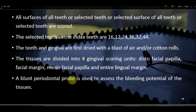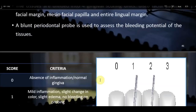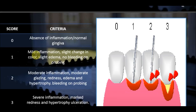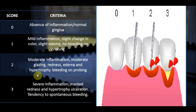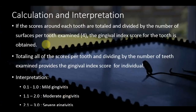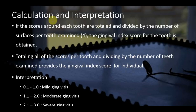Teeth and gingiva are dried with air or cotton rolls. Four gingival units are assessed per tooth: disto-facial papilla, facial margin, mesio-facial papilla, and lingual margin. A blunt periodontal probe is used to assess bleeding potential. Scoring: 0 = normal gingiva, no inflammation; 1 = mild inflammation, slight color change, slight edema, no bleeding on probing; 2 = moderate inflammation, redness, edema, bleeding on probing; 3 = severe inflammation, marked redness, hypertrophy, spontaneous bleeding.